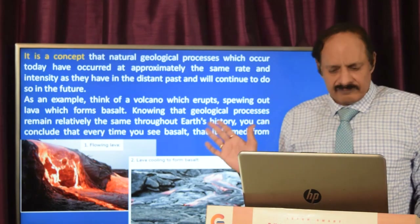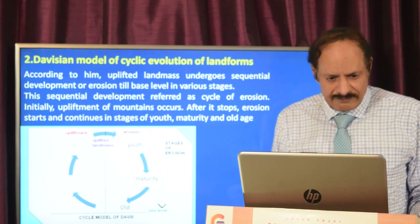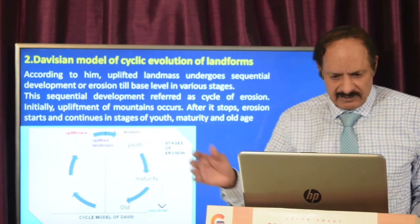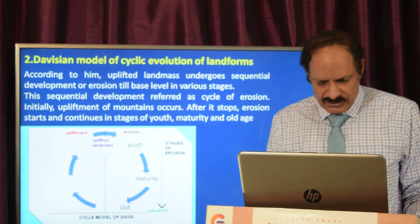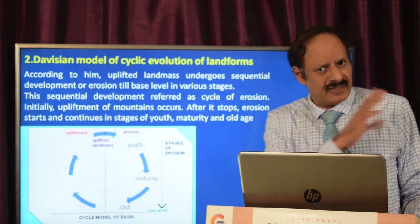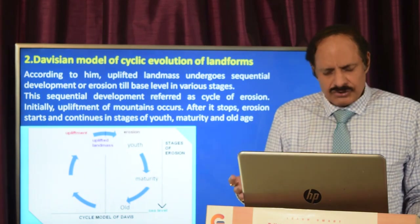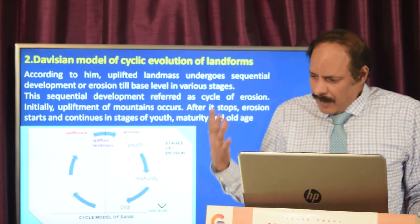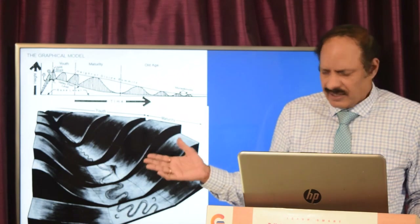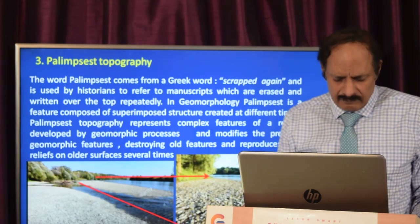The second principle is the Davisian model of the cycle of evolution of landforms. According to Davis, uplifted landmasses undergo sequential development — the youth stage, maturity stage, and old age — after which the old stage gets uplifted and eroded again. The basic difference between Davis and other geomorphic cycle models is that Davis believed erosion starts only after upliftment ends. However, it is now understood that upliftment, erosion, transportation, and deposition occur simultaneously — what are later described as polycyclic platforms.